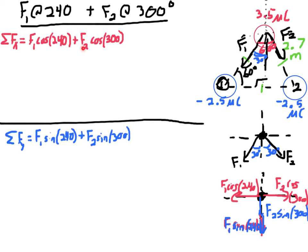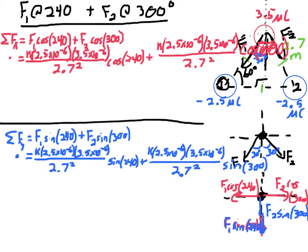Substituting everything in using micro = 10⁻⁶, and using absolute value even though it's negative 2.5, here's the Coulomb's Law for the force pulling him down at cosine 240 degrees — we got that 240 from going all the way around to the positive x-axis — plus cosine 300 degrees for the other force. Same thing in the y-axis, except sines are getting me my y-components. We're adding the two because measuring angles back around to the positive x-axis lets the cosines and sines take care of direction.